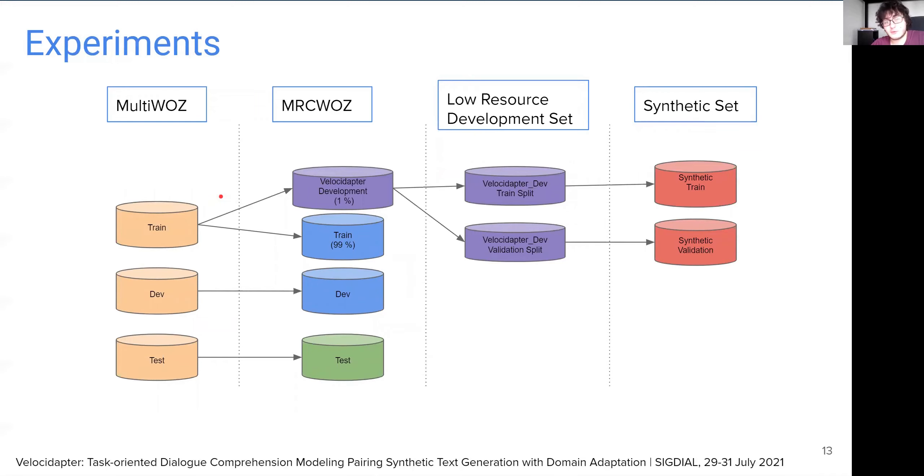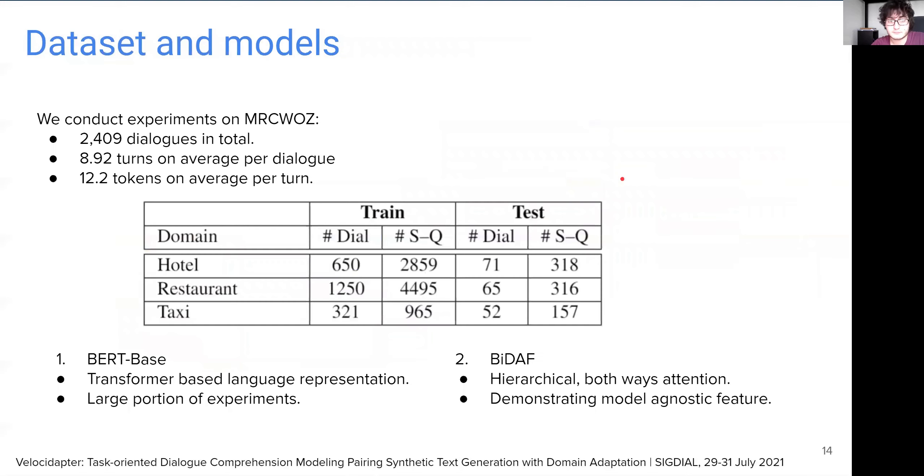For creating MRC-WOZ, we first match each dialogue in train, development, and test splits of MultiWOZ with questions. We then extract 1% of training data for our low resource settings, and split it into train and validation sets. We then use these separate splits to generate respective synthetic sets using our framework. MRC-WOZ has over 2,000 dialogues spanned over 3 domains, where each dialogue has about 9 turns on average, and 12 tokens per turn.